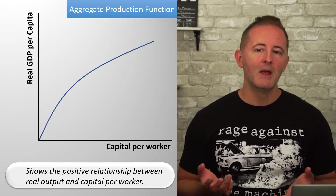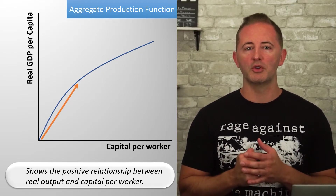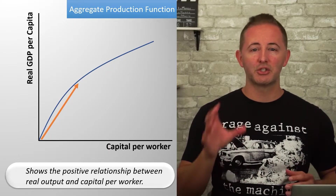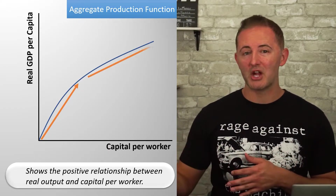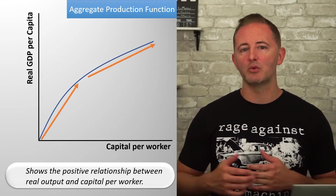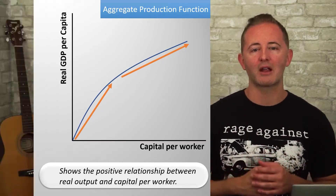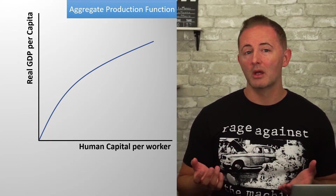There is a tremendous leap in productivity when a farmer goes from using hand tools to an old-fashioned rickety tractor, and they'll be even more productive with better and better tractors — but the increase in productivity isn't as dramatic as that first jump. We could also draw the aggregate production function with the x-axis labeled human capital per worker, and that would also work.